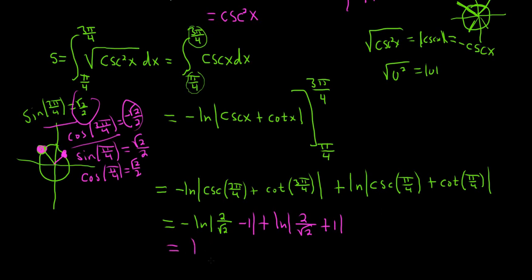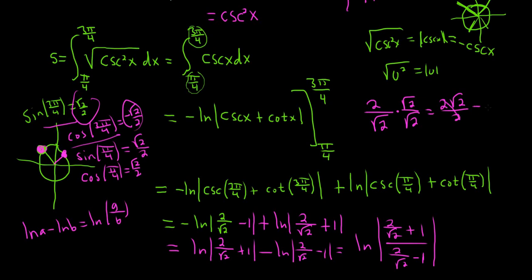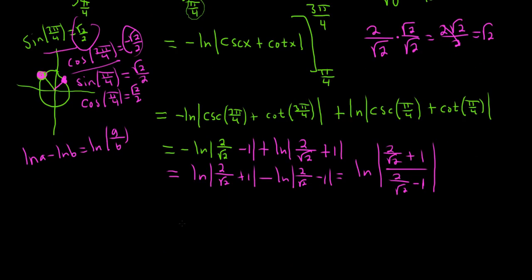We can write this as ln of (2 over square root of 2 plus 1) minus ln of (2 over square root of 2 minus 1). Using the property that ln a minus ln b equals ln(a/b), this becomes ln of (2/√2 + 1) over (2/√2 − 1). Since 2 over square root of 2 simplifies to square root of 2 after rationalizing, the final answer in exact form is the natural log of the absolute value of (square root of 2 plus 1) over (square root of 2 minus 1).